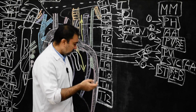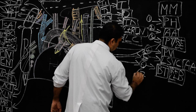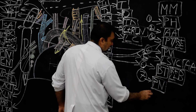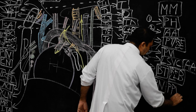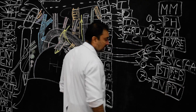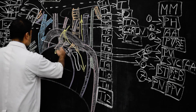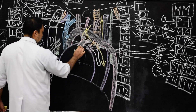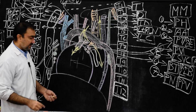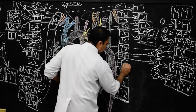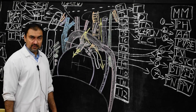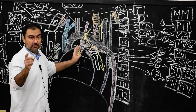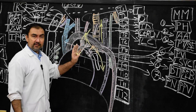Along with this, structure number seven will be phrenic nerve as well as pericardiophrenic vessels. Please note down — phrenic nerve and pericardiophrenic vessels. Phrenic nerve is also included in this middle mediastinum. So phrenic nerve and pericardiophrenic vessels are included. It is a content of middle mediastinum — only phrenic nerve and pericardiophrenic vessels, not vagus nerve.